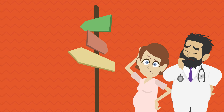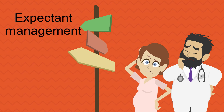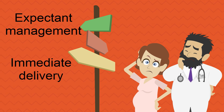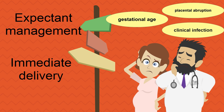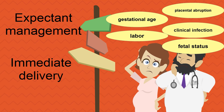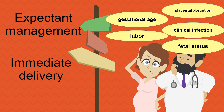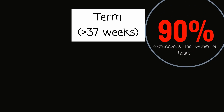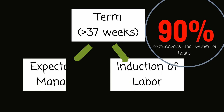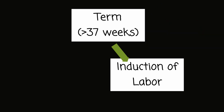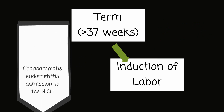Once we have confirmed that rupture of membranes has occurred, we need to move on to management. How do we decide on expectant management versus immediate delivery? The patient's gestational age, presence of clinical infection, placental abruption, labor, and fetal status all have to be taken into account. If the patient is term — greater than 37 weeks — approximately 90% of patients will go into spontaneous labor within 24 hours. Labor should be induced either at the time of presentation, or the patient can be expectantly managed. Induction of labor reduces the time to delivery and the rates of chorioamnionitis, endometritis, and admission to the neonatal intensive care unit. If the patient does not go into spontaneous labor on her own, then labor induction should be performed with oxytocin.